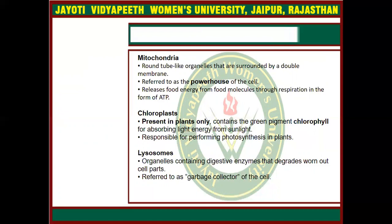The next organelle is chloroplast, which is present only in plants. It is absent in animals. It uses sunlight to produce nutrients for the plants. The process by which it utilizes sunlight is known as photosynthesis, and it synthesizes the nutrient materials for the plants.